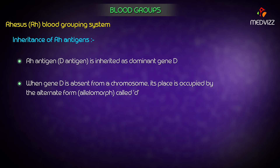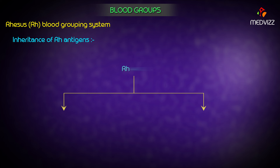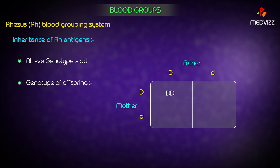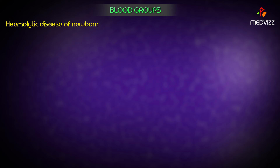The Rh antigen is inherited as a dominant gene D. When gene D is absent, its place is occupied by the alternate form, small d. Rh gene is inherited from both father and mother. An Rh positive individual may be homozygous (DD) or heterozygous (Dd). Of the 85% Rh positive individuals, about 35% have the DD genotype and 50% have the Dd genotype. The genotype of an Rh negative individual is dd. The possible genotypes of offspring are DD, Dd, or dd depending on the parental gametes.